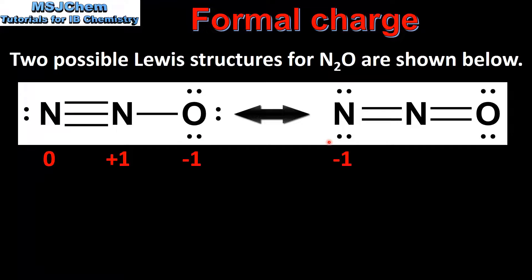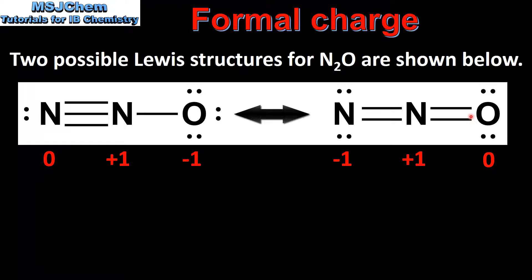Next we look at the Lewis structure on the right. This nitrogen atom has five valence electrons, minus four non-bonding electrons, minus half of four which is two, giving a formal charge of negative one. The nitrogen atom in the middle has five valence electrons, minus half of eight which is four, giving a formal charge of plus one. And this oxygen atom has six valence electrons, minus four non-bonding electrons, minus half of four which is two, giving a formal charge of zero.